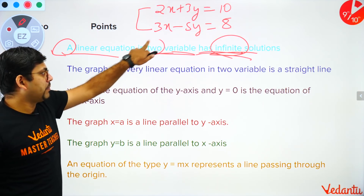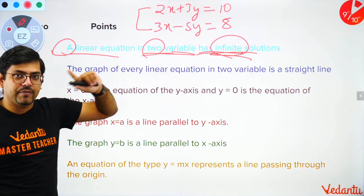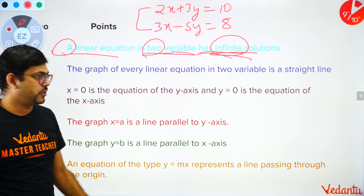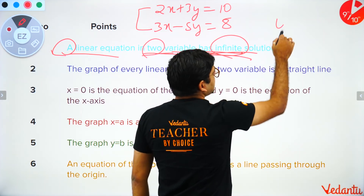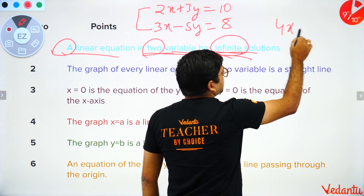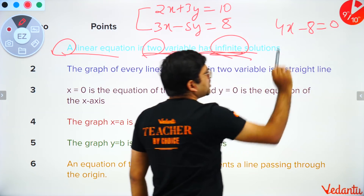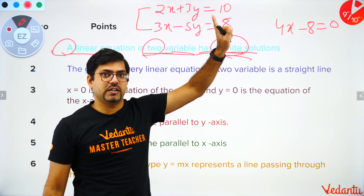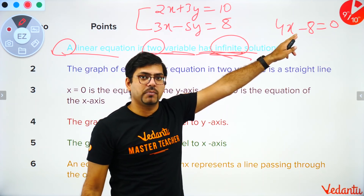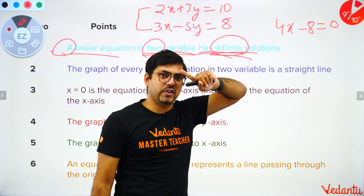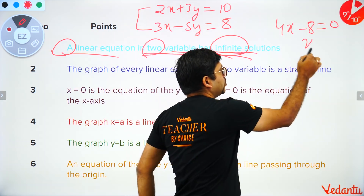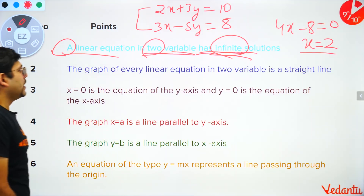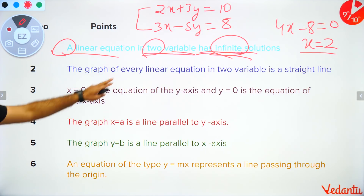However, if you have a linear equation in one variable, it will have only one solution. For example, 4x - 8 = 0 is a linear equation in one variable, so the number of solutions is one: x = 2.